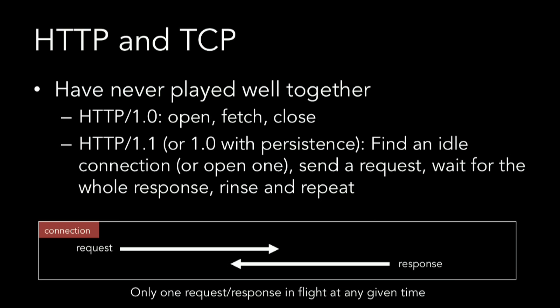So in the beginning — 1991 or so — there was HTTP1. HTTP1 ran over the TCP protocol, and you probably know that HTTP and TCP have traditionally not worked well together. What happens is a client opens a TCP connection to a server, sends a request over that connection, and the server responds. While that exchange is happening, nothing else can happen over that connection. This is something we call head-of-line blocking — an outstanding request doesn't allow that connection to be used for anything else.